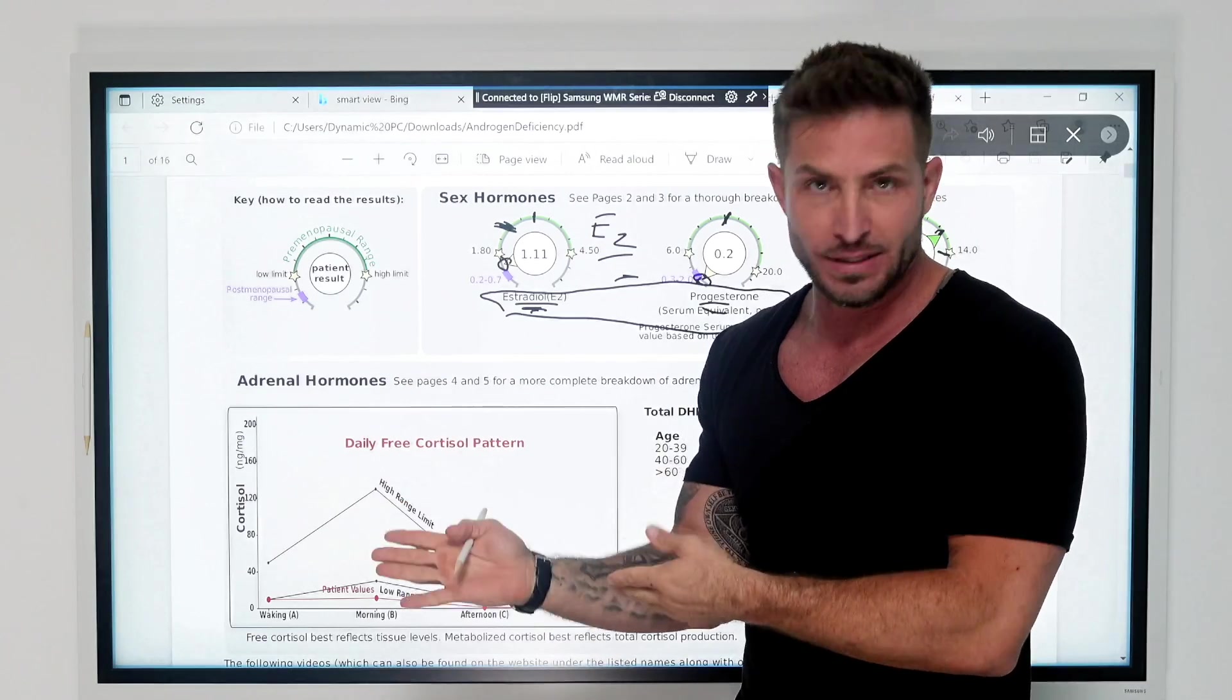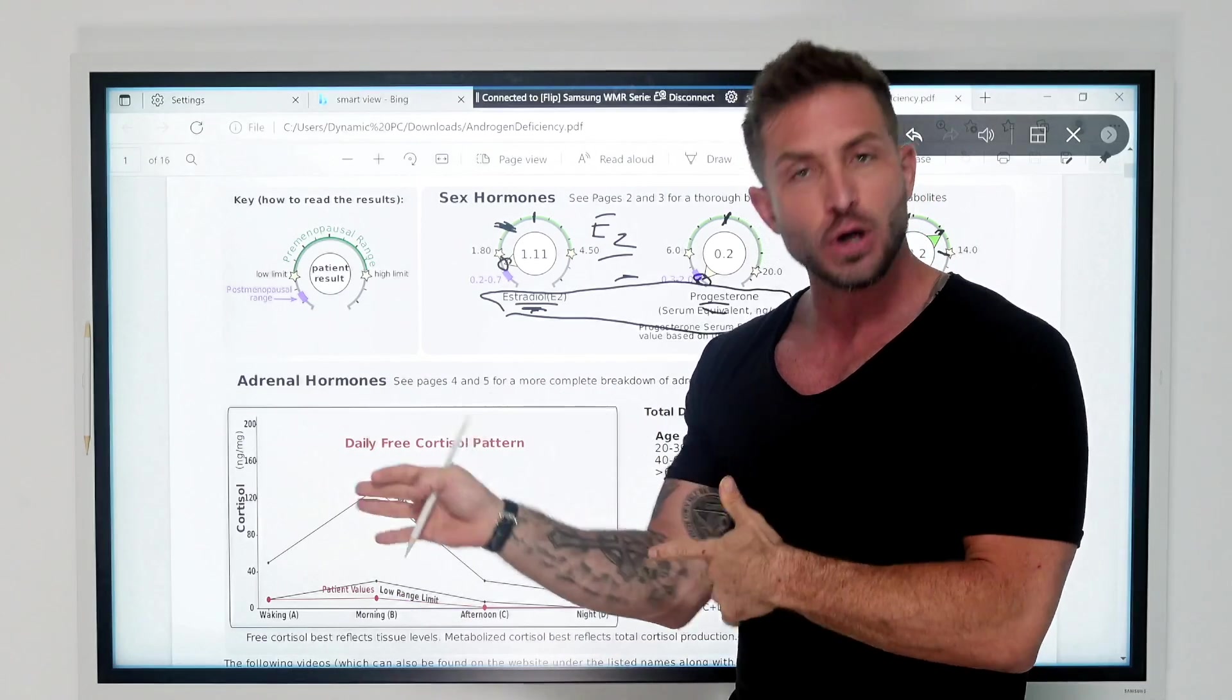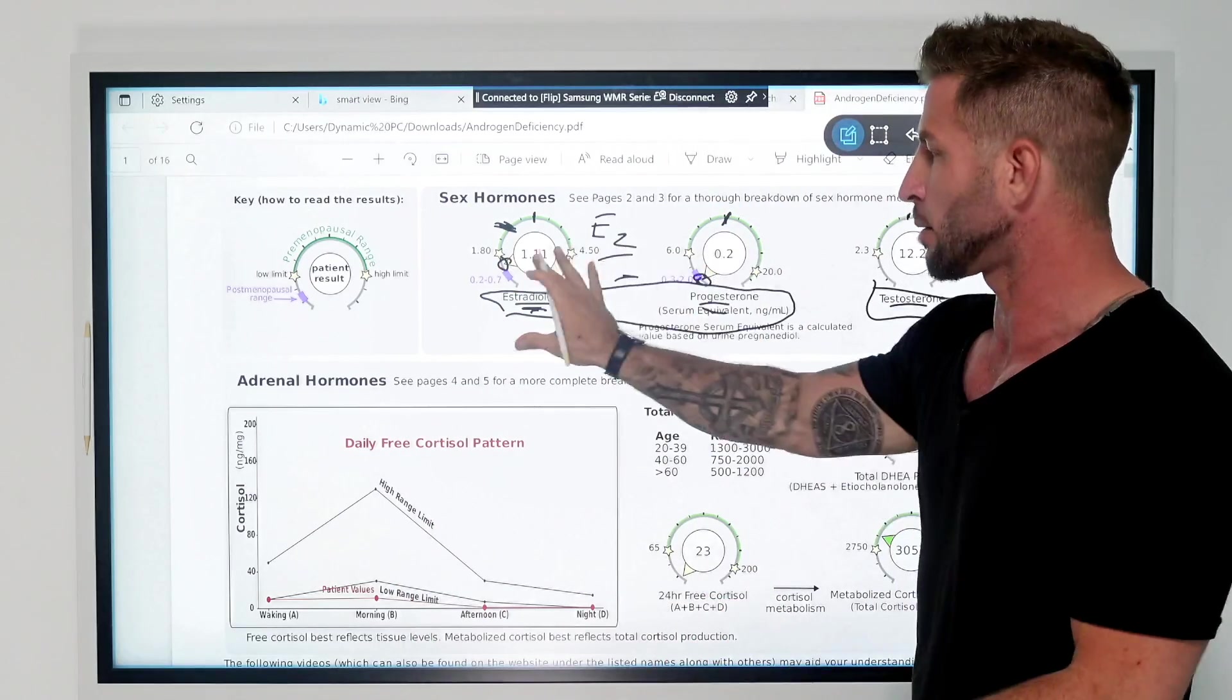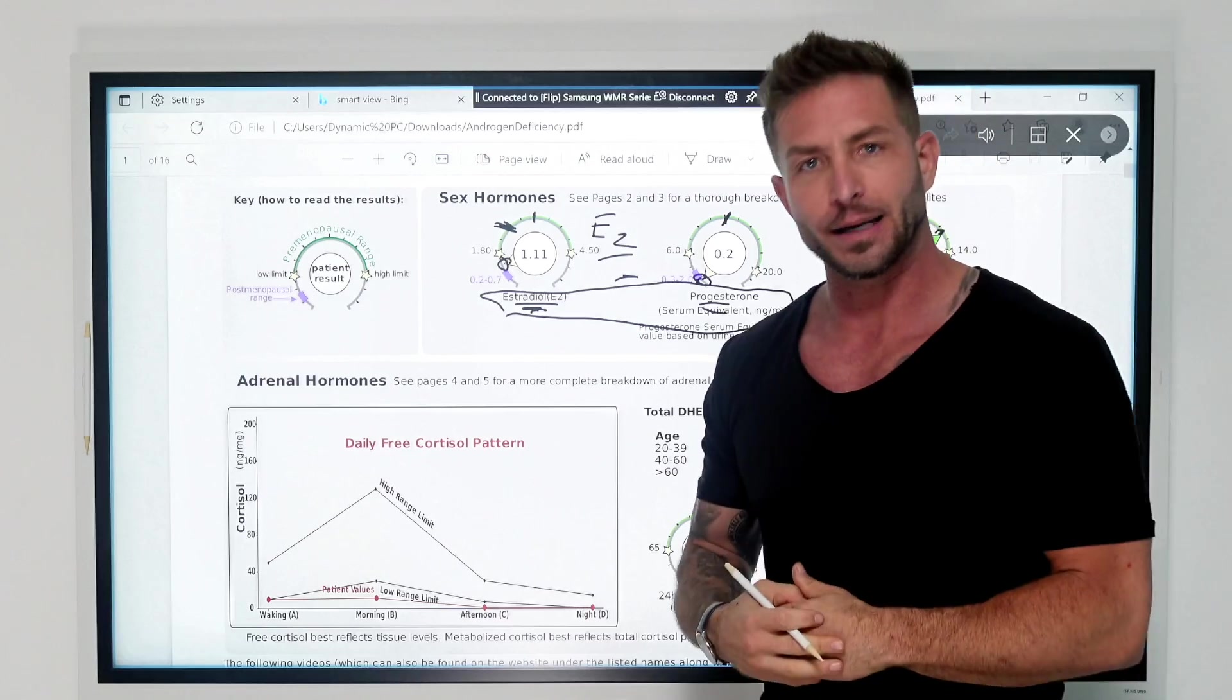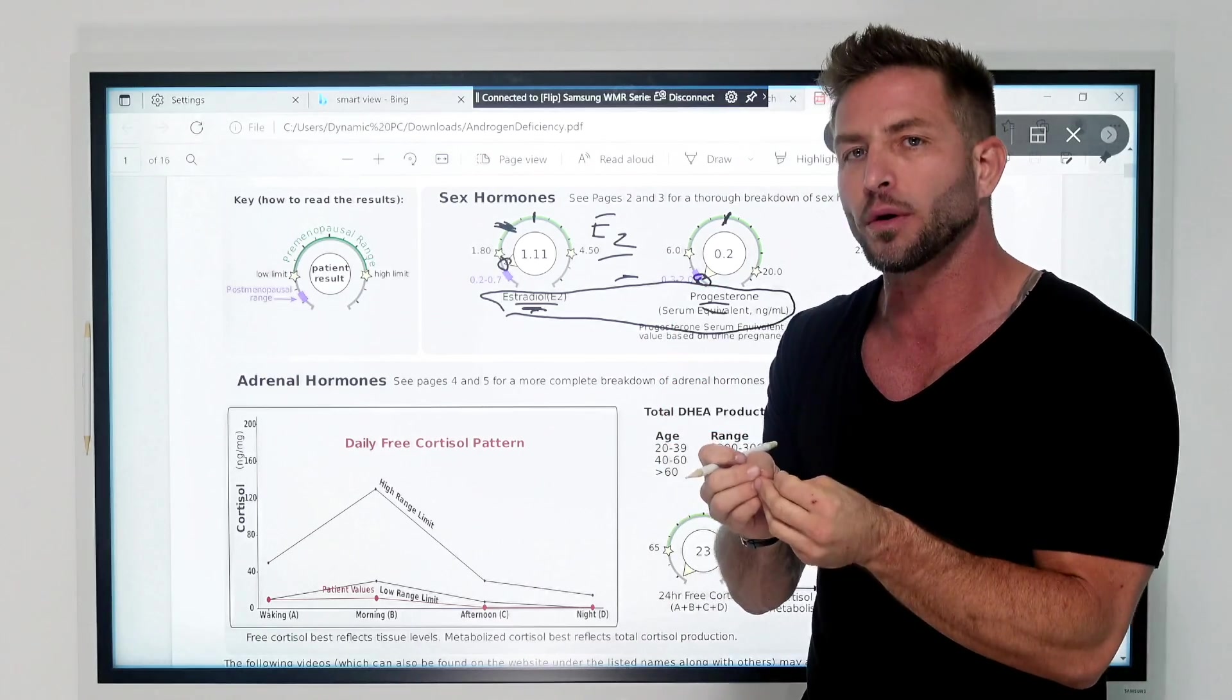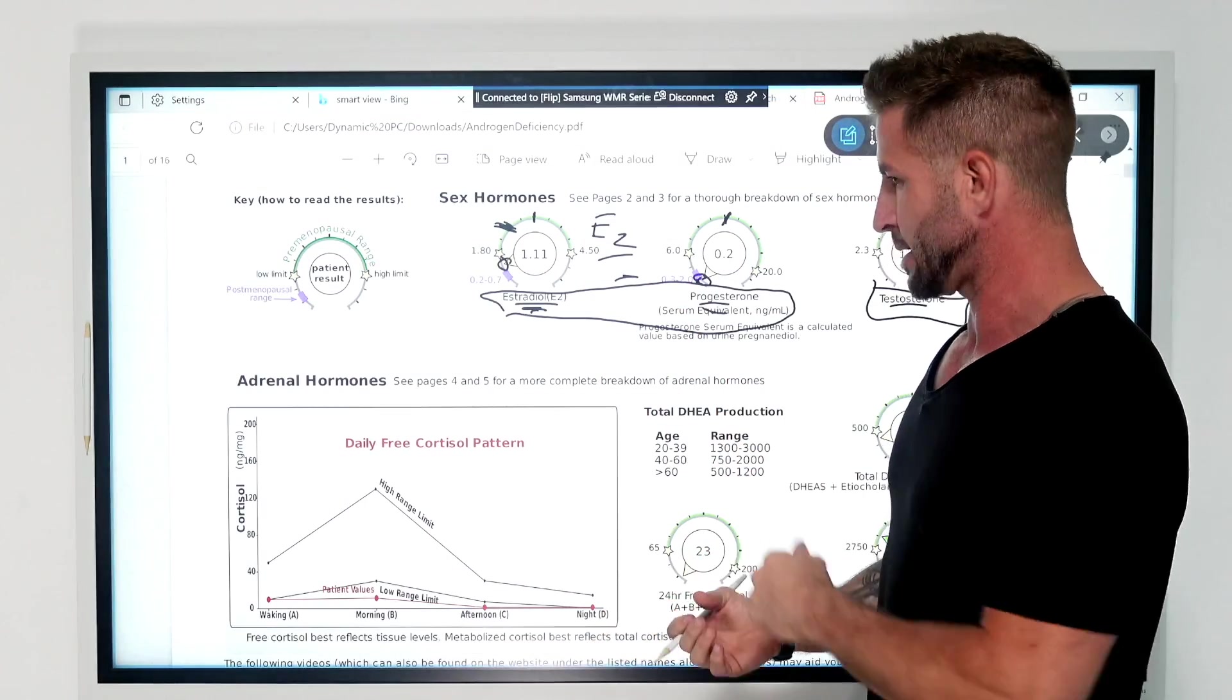For example, you do see that with testosterone, a free, right, and a total, but you don't see that very often with progesterone and estrogen. Here, these are the free hormones that are left available for the body to use, but it's measuring all the metabolites, and this becomes important as we continue down her test.